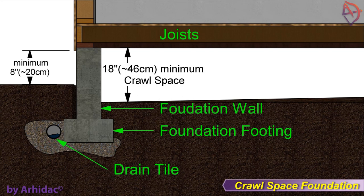There must be a minimum crawl space of 18 inches or about 46 cm from the floor joist to the ground, and 12 inches or around 31 cm between the ground and the beam that supports the joists. Crawl space foundations are often constructed with 2 feet or 61 cm beneath the joists to provide easier access for plumbing, electrical, or other mechanical repairs.